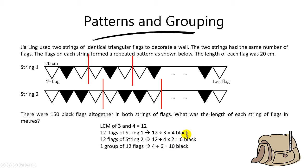So now you can do grouping. You take 4 plus 6, you get 10 black. That will be in 1 group of 12 flags. So to find number of groups, you simply take the total black color flags, divide by 10, you get 15 groups.